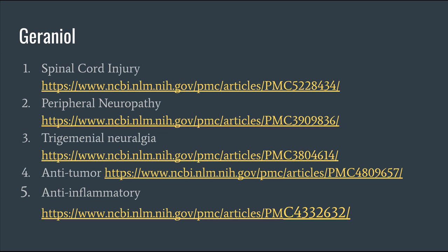Geraniol has a very interesting mechanism of action: it helps significantly with neuropathic pain, which is difficult to control medically. Neuropathic pain stems from inflammation or aggravation of nerves — including trigeminal neuralgia, a very painful condition involving nerve irritation in the face, and peripheral neuropathy affecting the limbs. It also helps with spinal cord injury and has antitumor and anti-inflammatory effects. These terpenes coexist in nature and are generally studied together, demonstrating a strong entourage effect when combined.